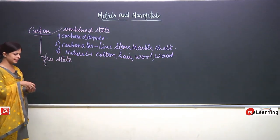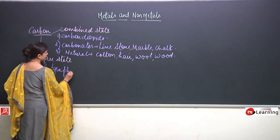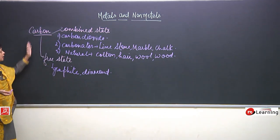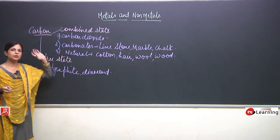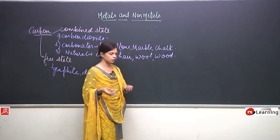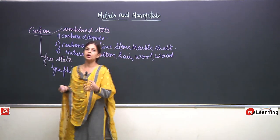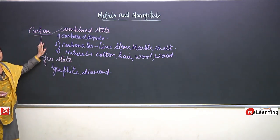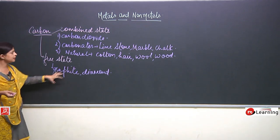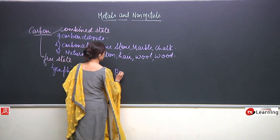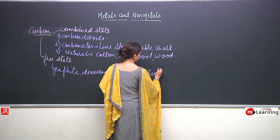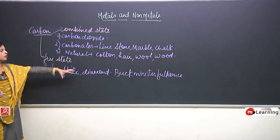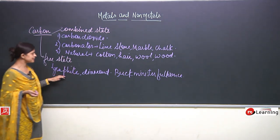In the free state carbon is present as graphite and diamond. To explain this, the definition of allotropes is: when an element exists in different forms, those forms are known as allotropes. The main allotropes of carbon are graphite and diamond, and the third one is Buckminster Fullerene, which is a more recent discovery and not as much is known about it.